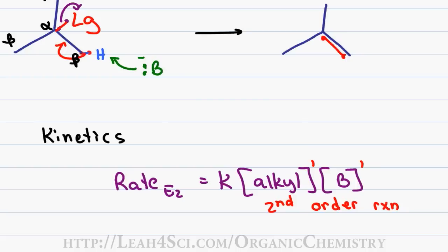And this tells me if I change the concentration of the alkyl group or the base, the rate of the reaction will change. If I double the alkyl concentration, the rate doubles. If I double the base concentration, the rate doubles. But if I double both of them, the reaction rate will quadruple because we get times two for the alkyl and times two for the base, and two times two gives me four times the reaction.